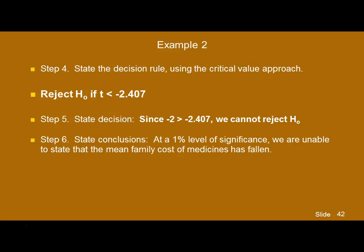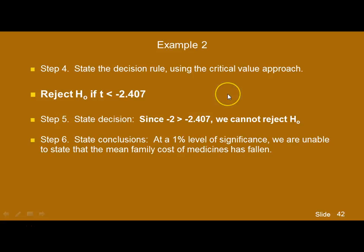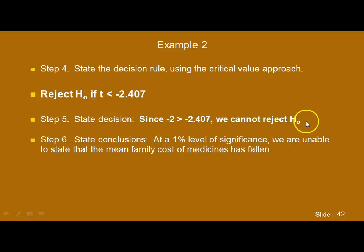Using the critical value approach, we're going to look at the left end of the T distribution with 48 degrees of freedom, n minus 1. Reject the null if we get a T value less than negative 2.407. Our calculated T was negative 2, and that's not less than negative 2.407, so we're unable to reject the null hypothesis. Therefore, at a 1% level of significance, we're unable to state that the mean family cost of medicines has fallen.